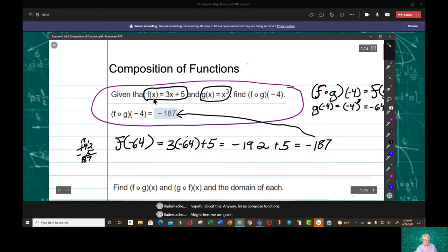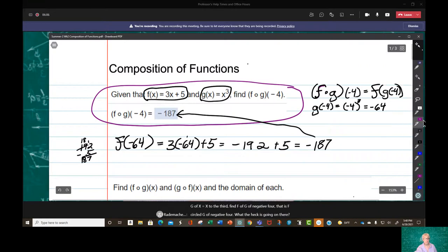Alright, here we are given that f of x equals 3x plus 5 and g of x equals x to the third. Find f circle g of negative 4. What the heck is going on there? Well, we've done this already the first week, just composing functions with numbers. You saw how easy it is once you translate the math code. So f circle g of negative 4 is really f of g of negative 4. And g of negative 4 equals, well, if g of x equals x to the third, then g of negative 4 is going to equal negative 4 in parentheses to the third power, which is negative 64.